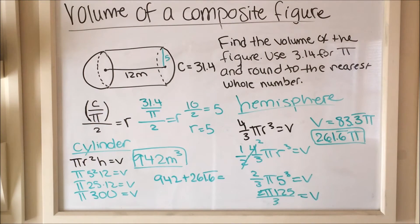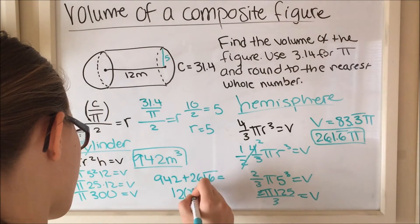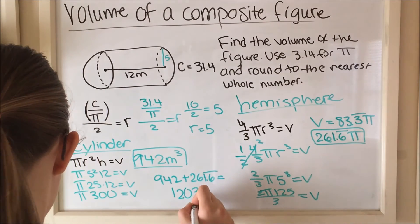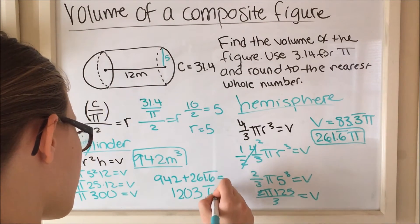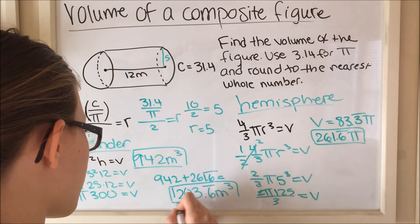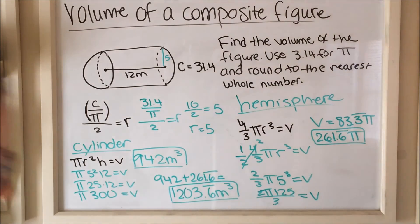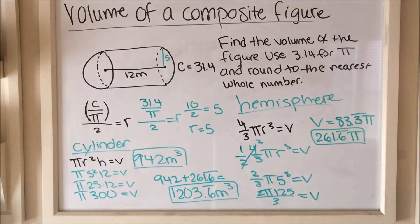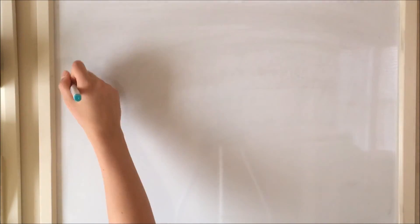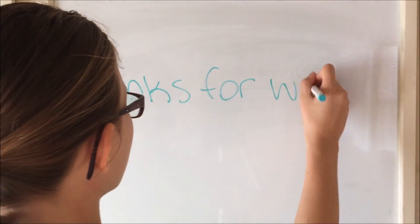Adding them together gives 1,203.6 repeating meters cubed. But that is not the final answer — the final answer is 1,204 meters cubed because we need to round to the nearest whole number. Thank you for watching this video. Please subscribe and like, and I hope this video helped you with math.